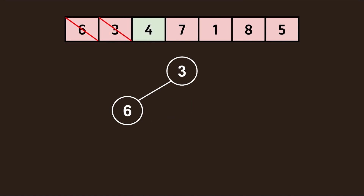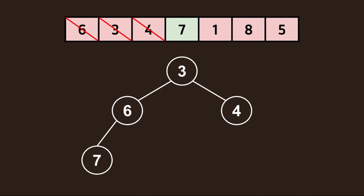The next value in our array is 4, which is inserted to the right of our root. Comparing this to its parent, we see that rule number 2 has already been met, so we can move on to the next value in our array, which is 7. Since the second row has fully been occupied, we'll insert it to the left of the left child. Comparing this node to its parent, we see that the condition has already been satisfied, so we can continue.